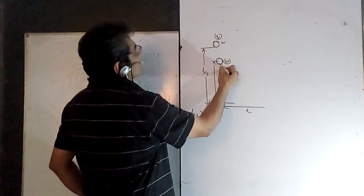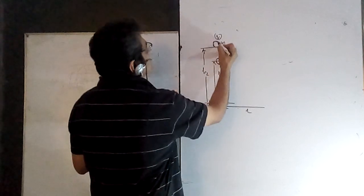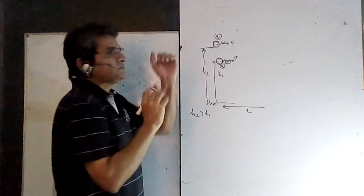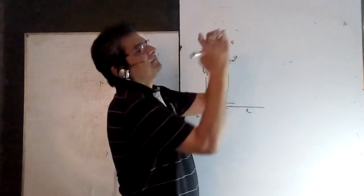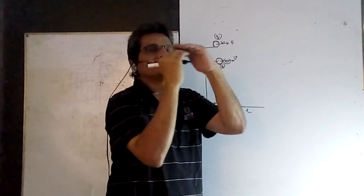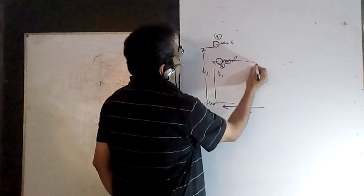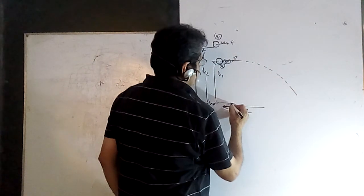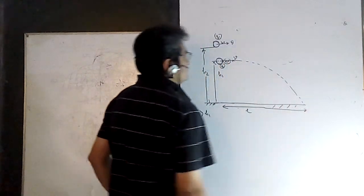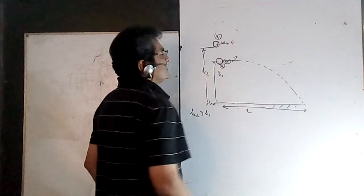They both have some charges and the height difference is not much. They are both projected with the same horizontal velocity v from a certain height. There is a gap between them and since they are charged there is a reaction force between them. It is given that one body hits the ground at a distance L, and we have to find at what height the other body will be at that point in time.